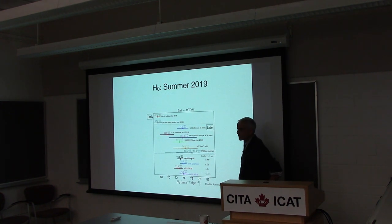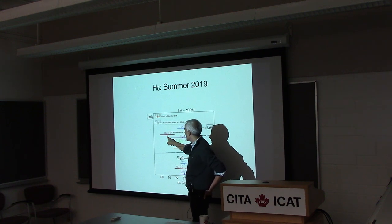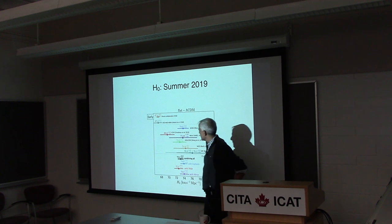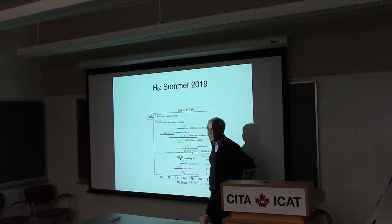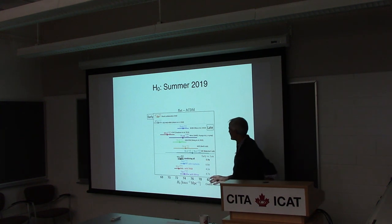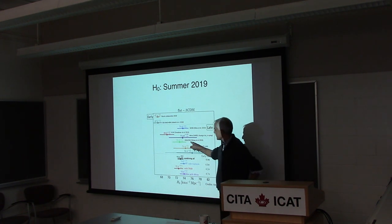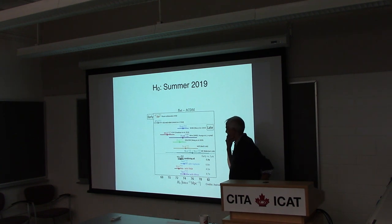Changing Cepheids to tip of the red giant branch, and changing Riess et al. to Friedman et al., gives a different H0. This is very recent and there have been some rebuttals. The SHOES measurement is very mature and definitely the most scrutinized of all these measurements. For the strong lensing one, there have been worries about the robustness of the mass models.